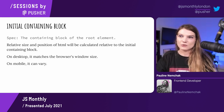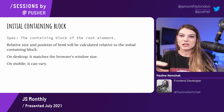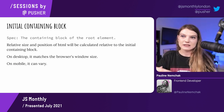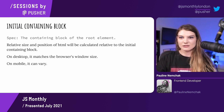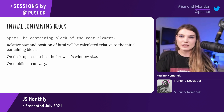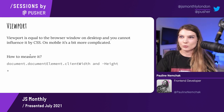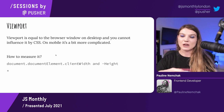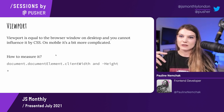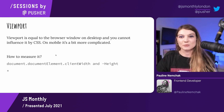So if you want to give HTML some relative size and position, it will be calculated relative to the initial containing block. On desktop it matches the browser's window size, and on mobile, as you can see further, it's a bit more complicated. About viewports — a viewport is equal to the browser window on desktop, and on mobile, as I said, it's a bit more complicated.